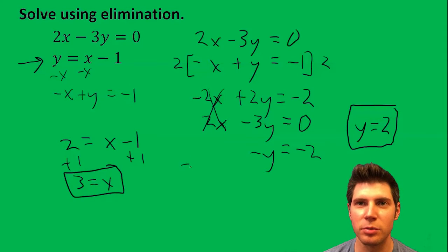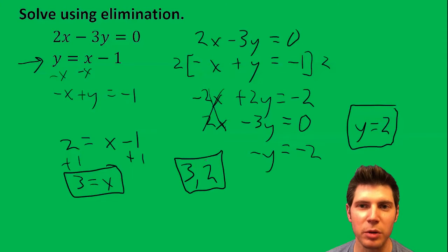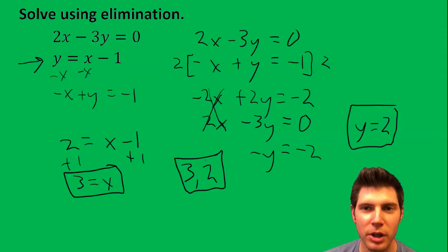So my final answer is 3 comma 2. The x is 3 and the y is 2. Anytime you have elimination, you line up your x's and your y's. Then you multiply one row so it'll cancel with a different row. And you're done.